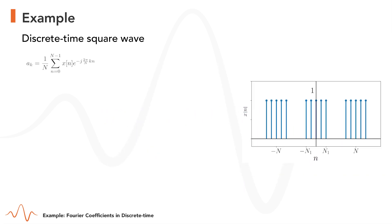Here we simply have the formula for the Fourier coefficients a_k in discrete time. We are going to consider this formula over a different interval, corresponding also to values of N over a period. If capital N is even, we can consider the summation originally in the interval n equals 0 until capital N minus 1, in the new interval from n equals minus capital N over 2 until capital N over 2 minus 1.